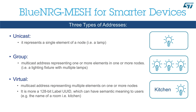In the Bluetooth Mesh, we have three types of addresses. First, the unicast address, which is assigned to the device during the provisioning process and represents a single element in a node. Then we have the group address, which is a multicast address representing one or more elements in one or more nodes.